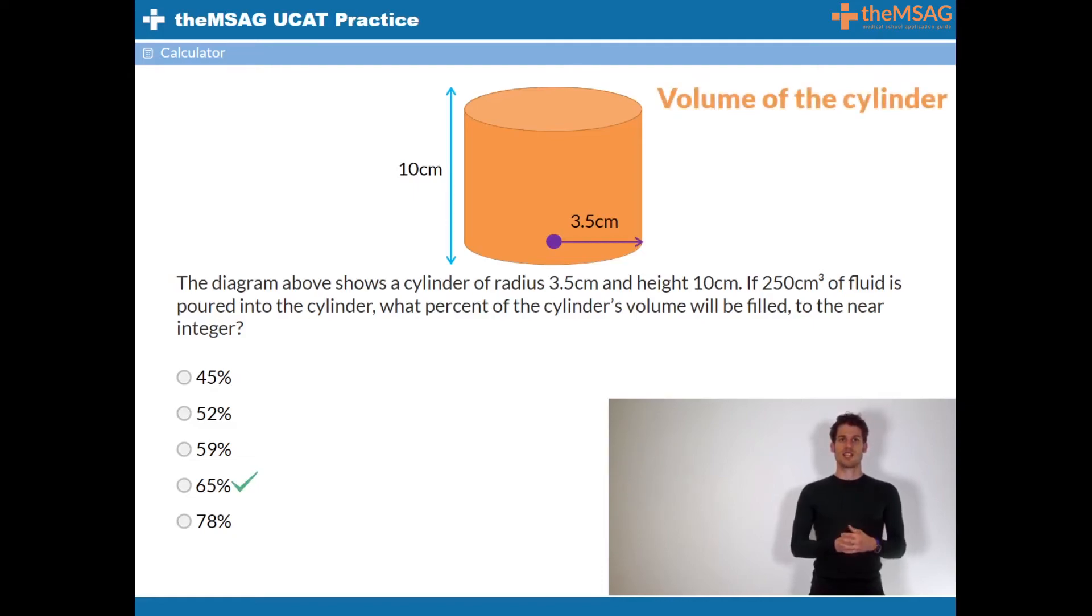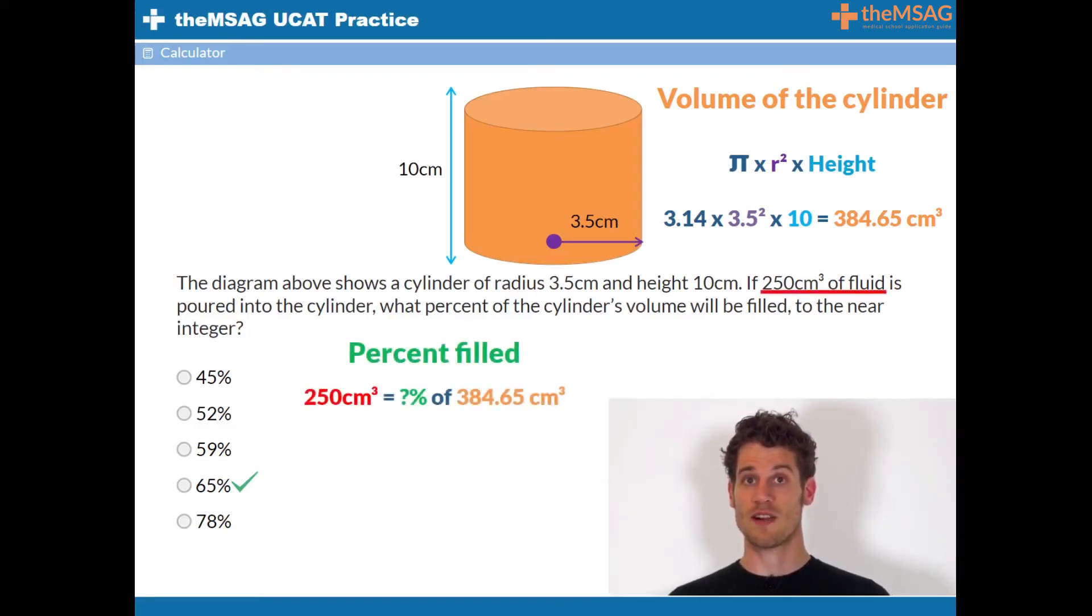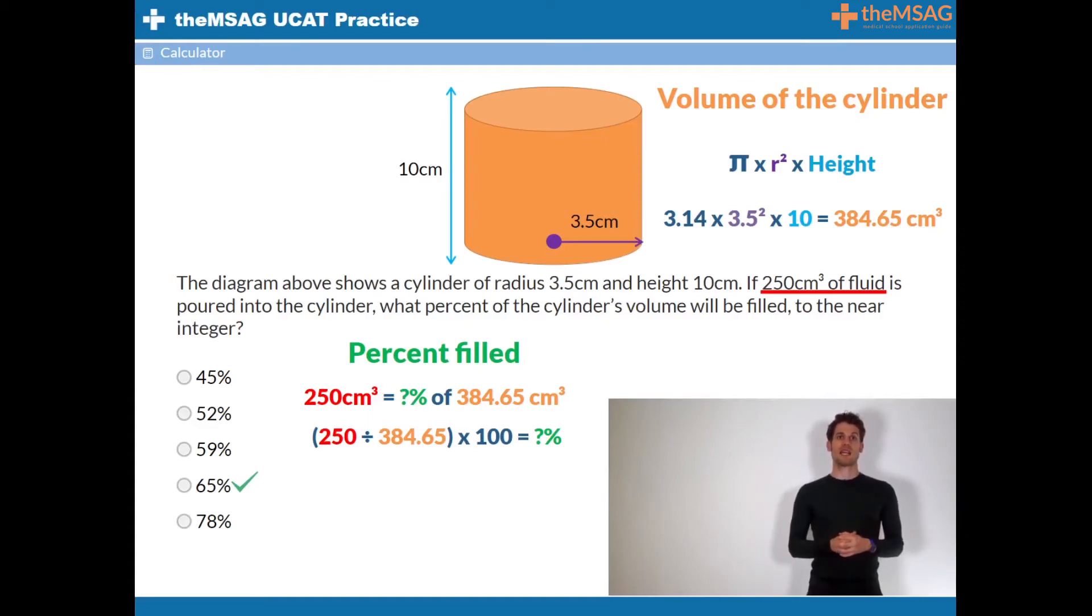The volume of a cylinder is pi times radius squared times height, which in this case would be 3.14 times 3.52 times 10, which equals 384.65. 250 out of 385.65 as a percentage is calculated by doing 250 over 384.65 times 100. This is covered in more depth in the percent of tutorial. 250 over 384.65 times by 100 equals 64.99, therefore 65%.